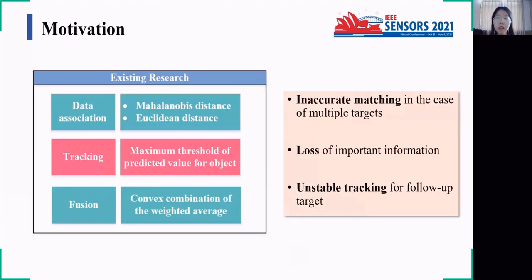Let's move to the first part. According to the survey, the previous methods contribute to inaccurate matching in the case of multiple targets, loss of important information, and unstable tracking for follow-up targets. Therefore, we proposed an improved method with radar and MobileEye.